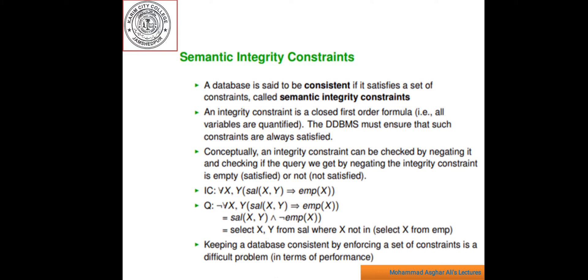In general, Semantic Integrity Constraints are rules that represent the knowledge about the properties of an application. They define static or dynamic application property which cannot be directly captured by the object and operation concept of the data model. Thus, the concept of an integrity rule is strongly connected with that of a data model in the sense that more semantic information about the application can be captured by means of their rules.